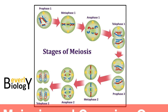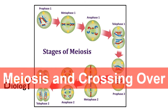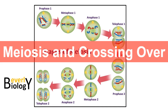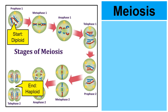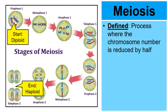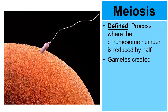The topic of this slideshow is meiosis and the process of crossing over. Cells that undergo meiosis start diploid but finish as haploid cells. Meiosis is the process where the chromosome number of a cell is reduced by half. Meiosis is also the process that creates gametes.